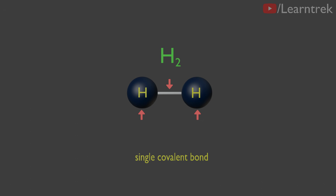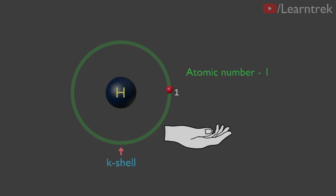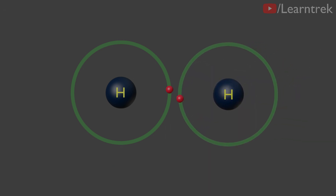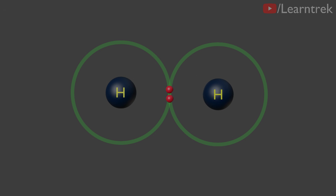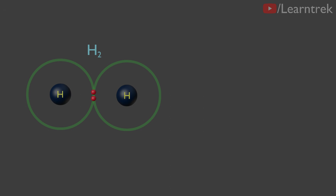The atomic number of hydrogen is one. Hence, a hydrogen atom has one electron in its K shell, and it requires one more electron to fill its K shell. So, two hydrogen atoms share their electrons to form a molecule of hydrogen, H2. That's how both hydrogen atoms achieve the electronic configuration of their nearest noble gas, helium.